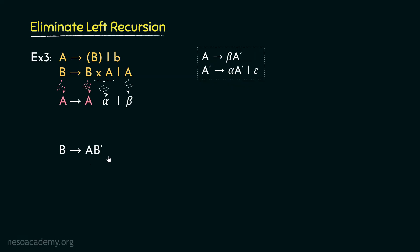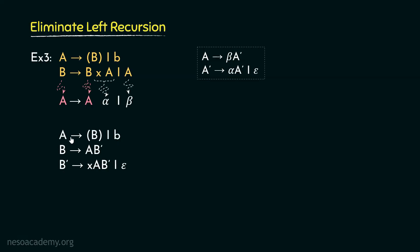We need to convert this production rule to eliminate the left recursion. B will be rewritten as A — that is beta — followed by the new non-terminal B prime. B prime should generate the alpha portion, so B prime can be rewritten as into A — that is alpha — followed by B prime itself or epsilon. The complete modified grammar is: A can be rewritten as B enclosed in parenthesis or B; B can be rewritten as AB prime; B prime can be rewritten as into AB prime or epsilon.